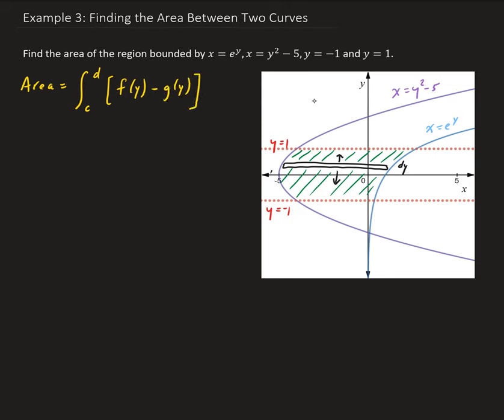Where f of y is the exponential function, which is here, the one that you see in blue. And g of y is the parabolic function. So let's go ahead and implement this. So we're going to have the integral from minus 1 to 1 of e to the y minus y squared minus 5 dy.